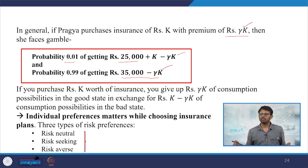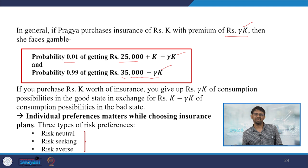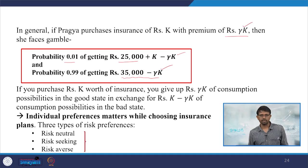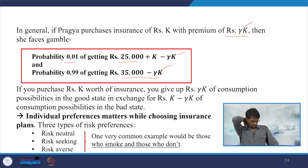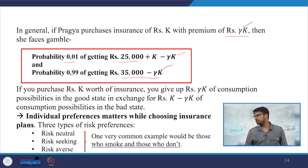There are three types of risk preferences that help us estimate how the consumer or patient is ready to bear insurance. One is risk-neutral, another is risk-averse, and the third is risk-seeker or risk-lover. For example, comparing a person who smokes versus one who does not: the non-smoker would be considered more risk-averse. The one who is not smoking regularly will prefer to be risk-averse.